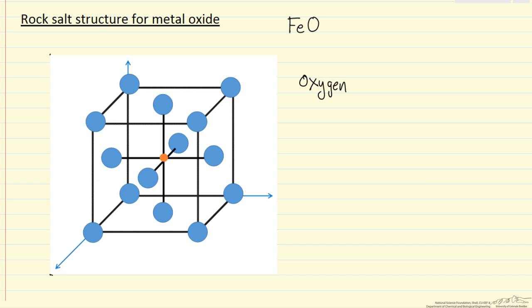And then we have, and I won't draw them in, but we have them now in all these locations, such that if we were to add up the structure, we should have one iron for every oxygen in this crystal structure.